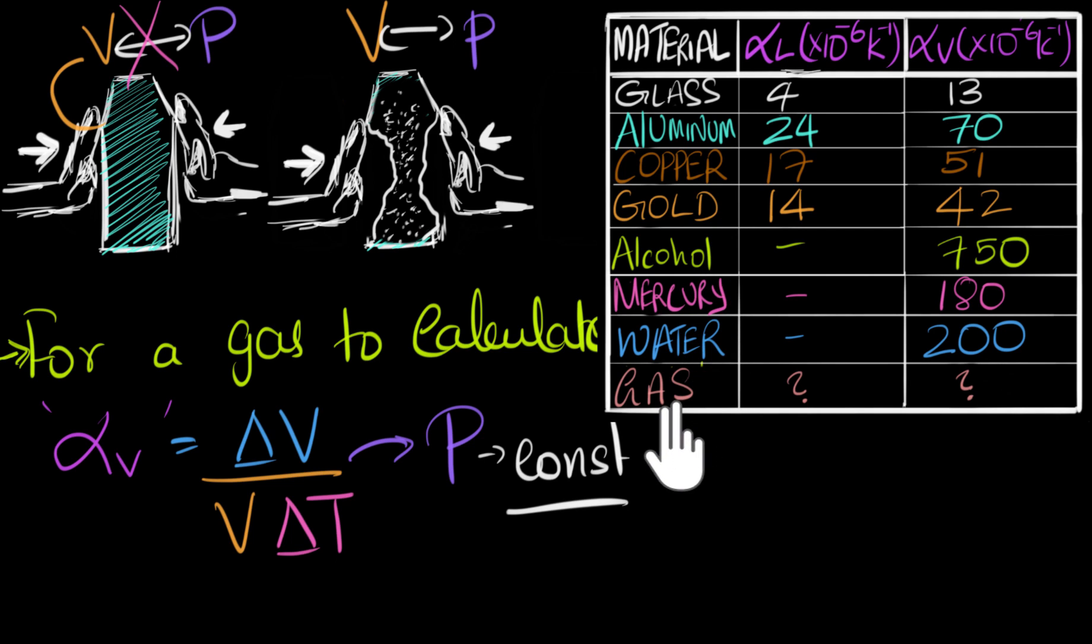However, with gas, the story is a little different. We do know how the volume of a gas changes with temperature. And since we already know that, and we will talk about that, we can figure out what would be the alpha V value of a gas theoretically. At least approximately, we can figure it out. So let's go ahead and do that.